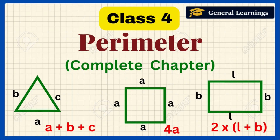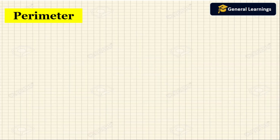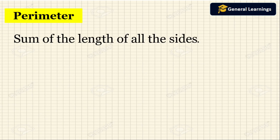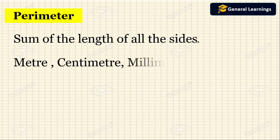Hello students, welcome back to our channel General Learnings. In this video you are going to learn how to find the perimeter of any shapes. First we will see what is perimeter. Perimeter is nothing but the sum of the length of all the sides. The unit of perimeter will be meter, centimeter, and millimeter.